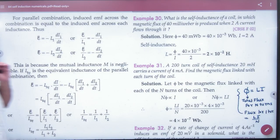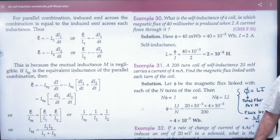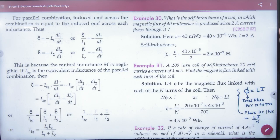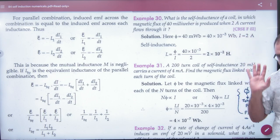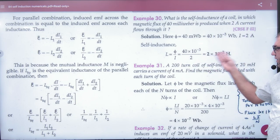Example 30: What is the self-inductance of a coil in which magnetic flux of 40 milliweber is produced when 2 ampere current passes through it? Self-inductance is L. 40 milliweber means 40 × 10^-3 weber. Using the formula Φ = Li, we get L = Φ/i. So L is equal to 5 by I, units are henry.